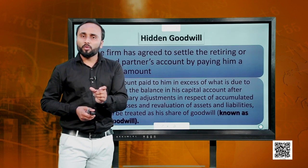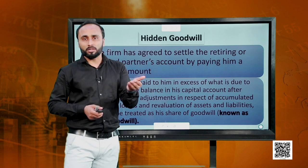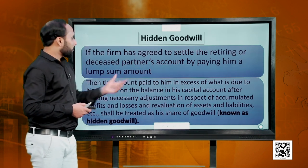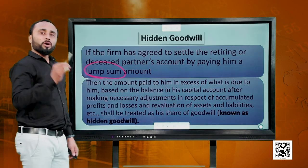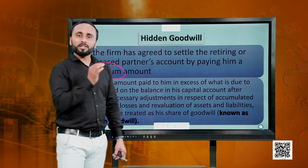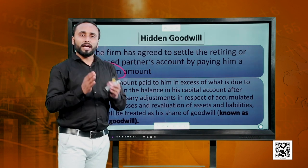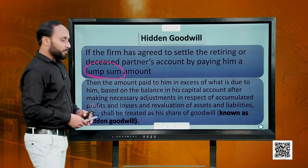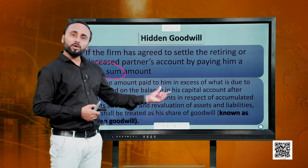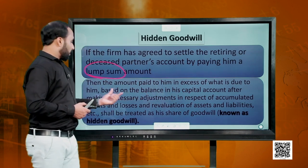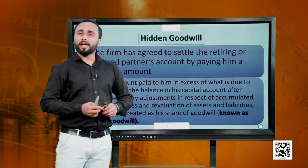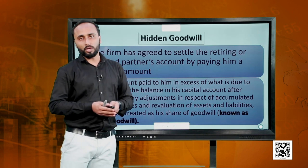Hidden goodwill means the amount of goodwill which is not given explicitly but you can find it out. In case of retirement, when payment to the retiring partner is made in a lump sum, you compare this amount with what was due to be paid to the retiring partner. If the amount paid is more than what was due, the excess is goodwill. The amount paid in excess of the balance of the retiring partner's capital account after all adjustments is the hidden goodwill.